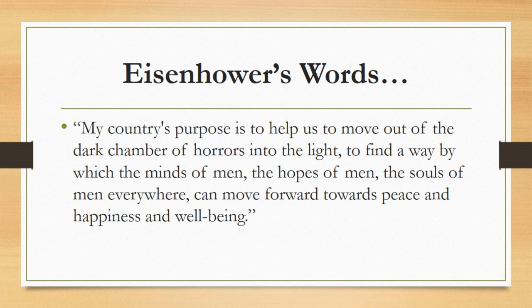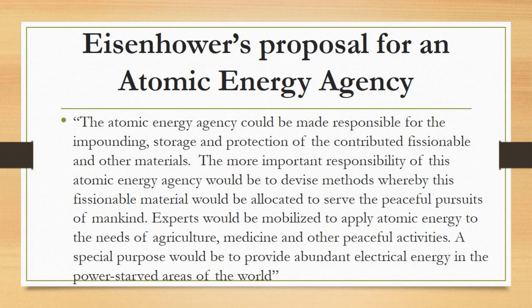He said: 'My country's purpose is to help us move out of the dark chamber of horrors into the light — to find a way by which the minds of men, the hopes of men, the souls of men everywhere can move forward towards peace and happiness and well-being.' During his speech, he gave a proposal for an agency to promote peaceful use of nuclear technology. His exact words were: 'The Atomic Energy Agency could be made responsible for the impounding, storage and protection of the contributed fissionable and other materials. The more important responsibility of this atomic energy agency would be to devise methods whereby this fissionable material would be allocated to serve the peaceful pursuits of mankind.'